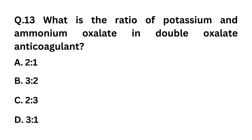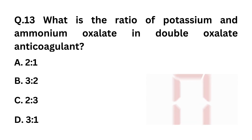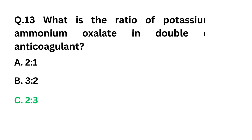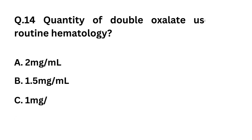Question 13: What is the ratio of potassium to ammonium oxalate in double oxalate anticoagulant? Option A: 2:1. Option B: 3:2. Option C: 2:3. Option D: 3:1. The correct answer is Option C: 2:3.